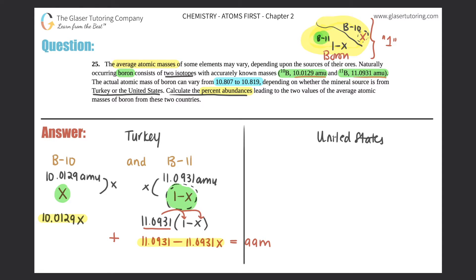And it always equaled the average atomic mass. I'm just going to say AAM. And they told us what the average atomic masses were, 10.807 and 10.819, depending on whether you're from Turkey or the United States. The Turkey one is going to be the first one that they said, which was 10.807 AMU. So what I'm going to do is I'm going to set this up. So I'm going to say 10.0129X plus 11.0931 minus 11.0931X equals the average atomic mass for Turkey, which was 10.807.